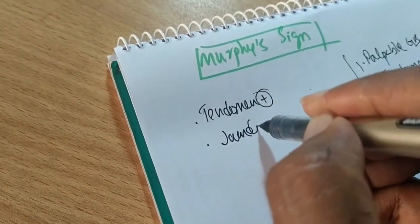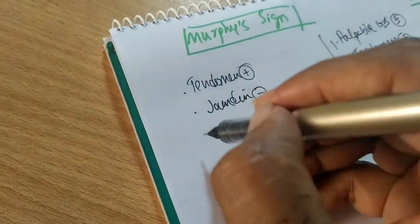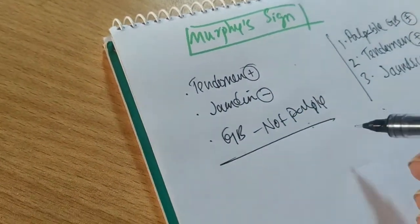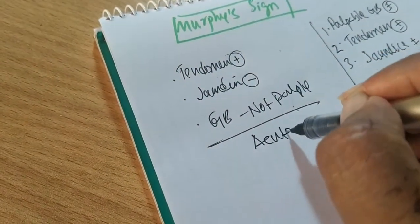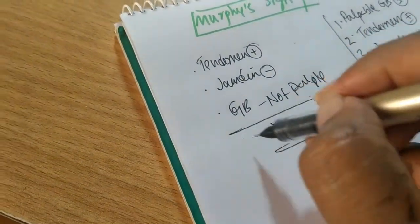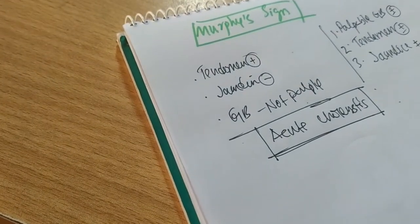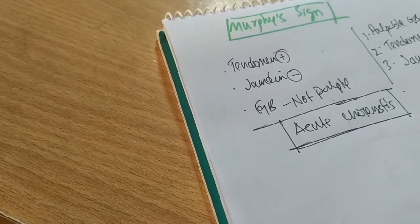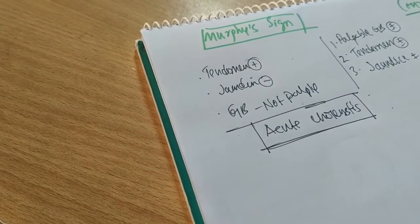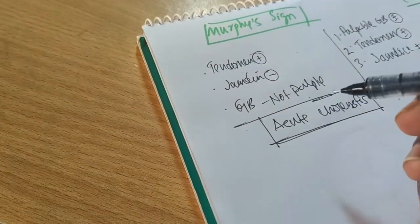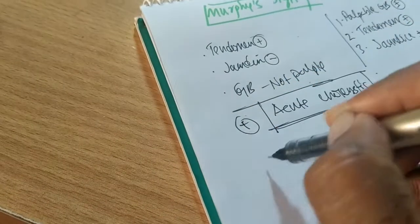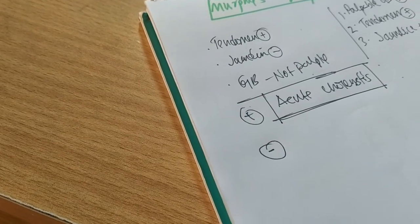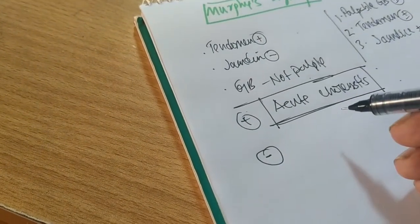So pain is present in the right hypochondriac region. The patient is usually not icteric, so jaundice is not present, and the gallbladder is of course not palpable. Murphy's Sign is positive in acute cholecystitis — tenderness is present in the right hypochondriac region, jaundice is not present, and gallbladder is not palpable, because in an acute case there is not enough time for the gallbladder to become distended and palpable. If Murphy's Sign is negative in the same setting, what are the differential diagnoses?